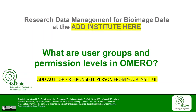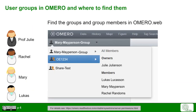Let's take a look at user groups and permission levels in OMERO. In OMERO, data is organized into groups and data belongs to users. In OmeroWeb, you can find the groups to which you have access in the upper left-hand corner. Shown here is just an arbitrary example in which we have Professor Julie with her research group of Rachel, Mary and Lucas who are together in a group.